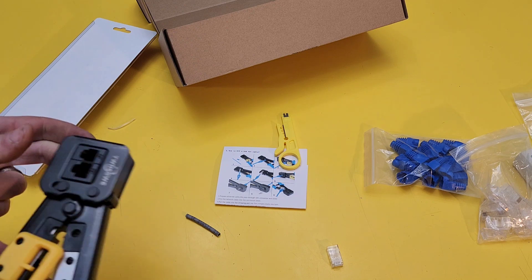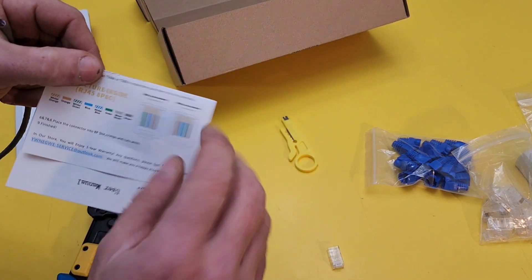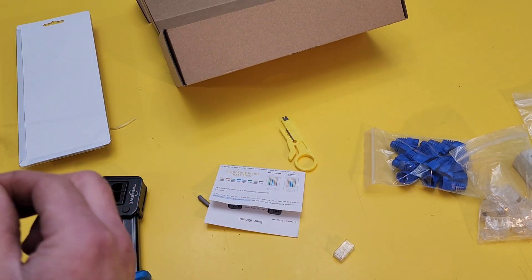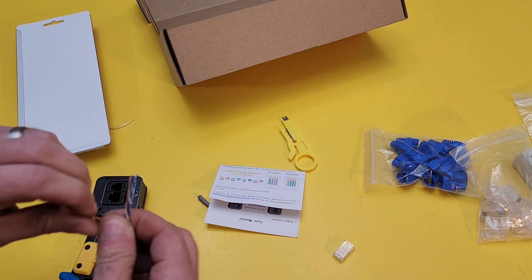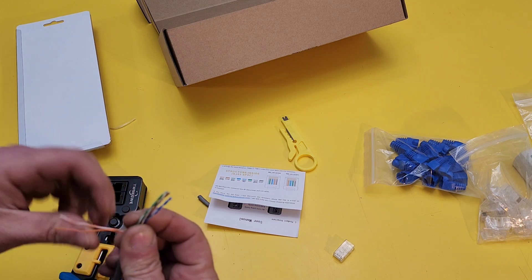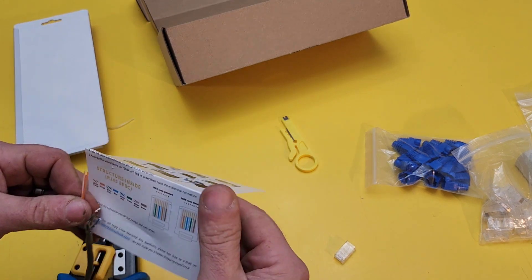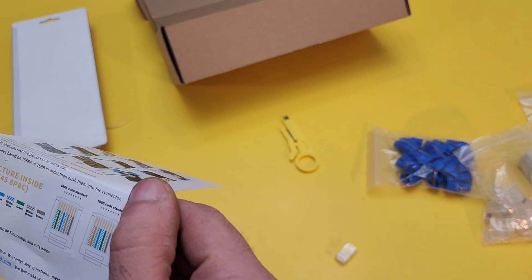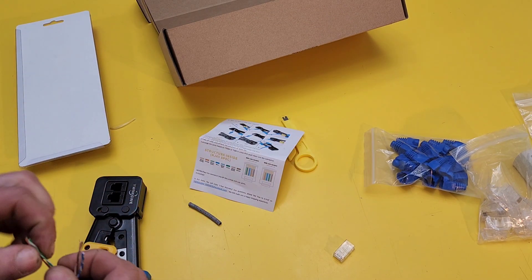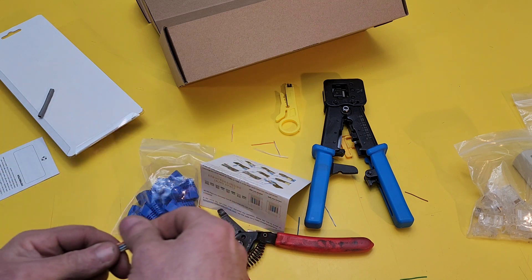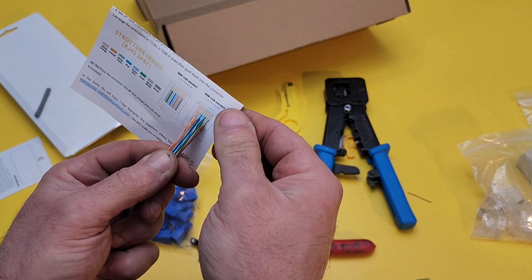And then just going off of this code structure right here, we'd go orange-orange, the orange stripe first. I always have to look at it too. Every time. Orange, orange, green. Lined up. Just like that. Starting with 1 through 8.